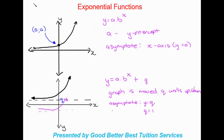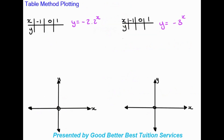So the most important things to know: when the x-axis is the asymptote, the equation is y = a × b^x. When the equation is y = a × b^x + q, the asymptote is represented on the y-axis with a non-zero value. Let's move on to some examples of plotting using the table method.